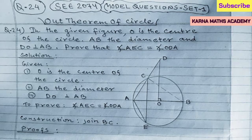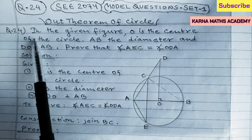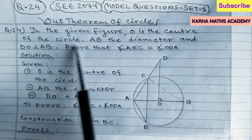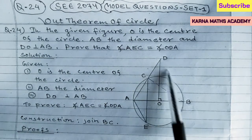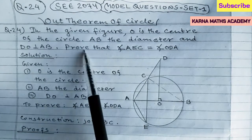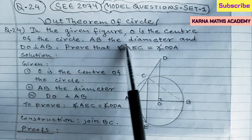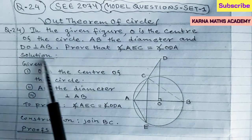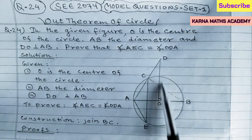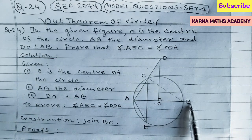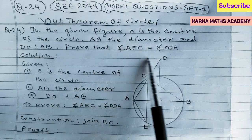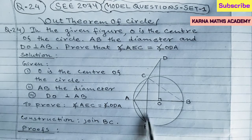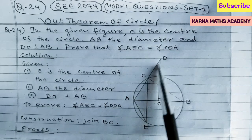Dear students, in question number 24, the question is: in the given figure, O is the center of the circle, AB is the diameter, and DO is perpendicular to AB. Prove that angle AEC is equal to angle ODA.